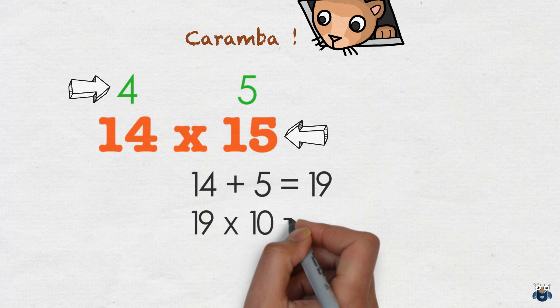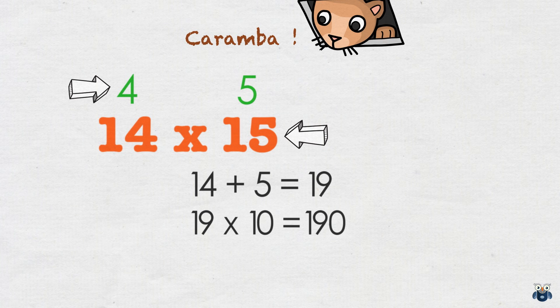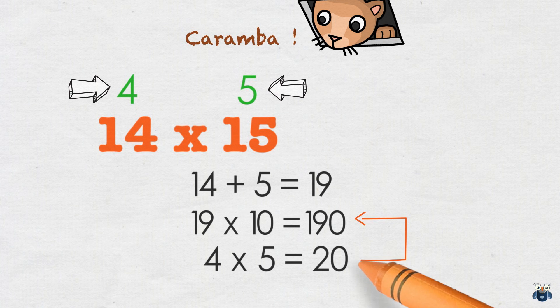And since our base is 10, we multiply 19 with 10, which gives us 190. We then multiply the two deficits. 4 times 5 is 20. Finally, we add 190 and 20 to get 210, which is our answer.